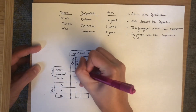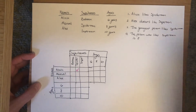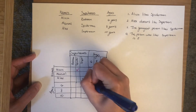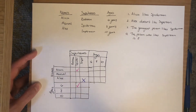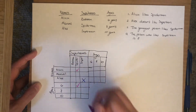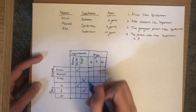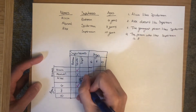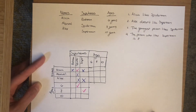The first clue says Alicia likes Spider-Man, so we put a big checkmark with Alicia and Spider-Man. The second clue says Alex doesn't like Superman, so we put an X for Alex and Superman. The third clue says the youngest person likes Spider-Man — the youngest is six — so we put a checkmark with six and Spider-Man. Finally, the person who likes Superman is eight, so we put a check with eight and Superman. Since every person only likes one superhero, if Alicia likes Spider-Man, then Manuel and Alex do not like Spider-Man — so we put X's there — and Alicia does not like Batman or Superman, so we put X's there too.